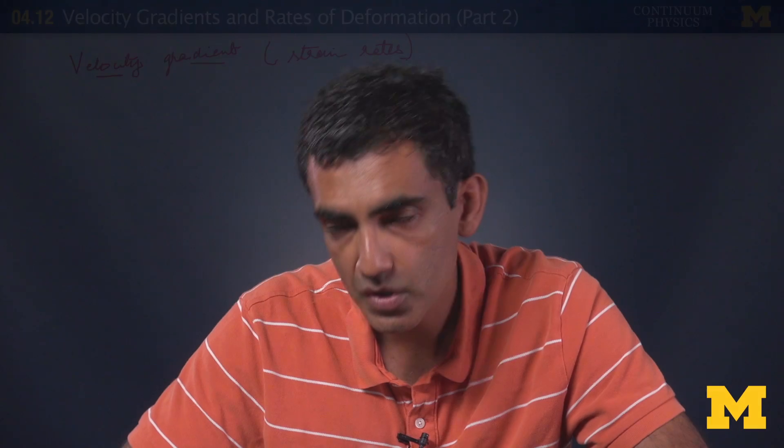We saw that the deformation gradient is our primary measure of, well, not of strain but of stretch, and how we get strain from the deformation gradient. We did not include the idea of rates there, we're going to do that now. So let's start, first of all, by looking at what often gets called the material velocity gradient.